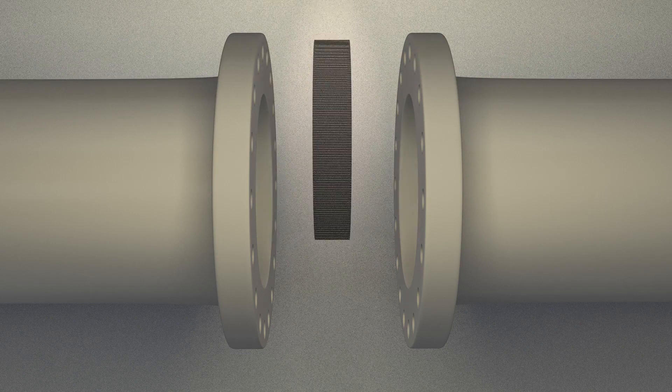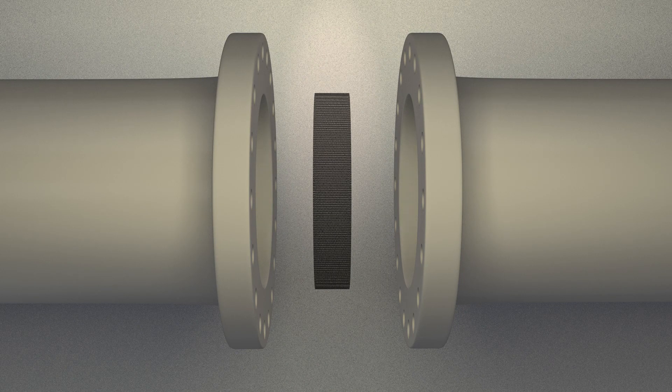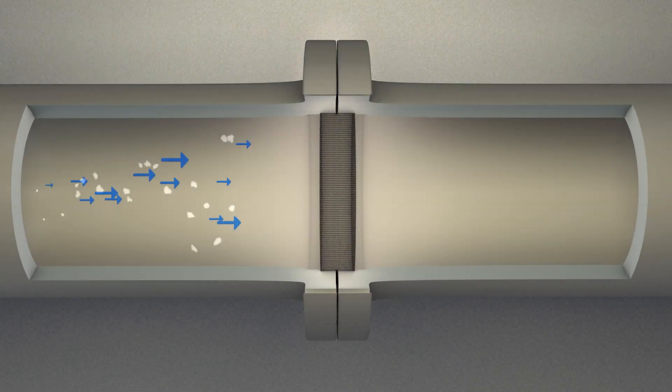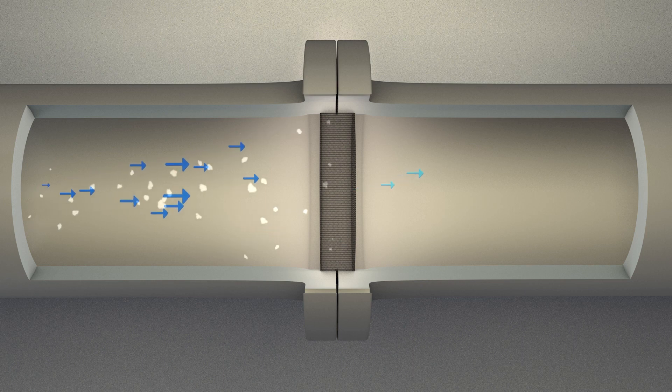Commonly, filters and strainers are positioned to capture solids and particulates. The filter will obstruct the flow through the pipe, lowering the pressure on the downstream side.